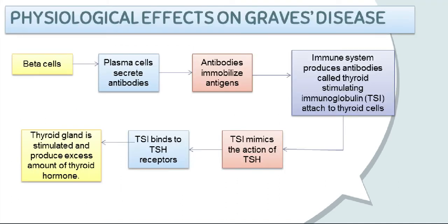How does Graves' disease develop inside a human body? We can evaluate this question by knowing the physiology of the disease state. B cells in the body trigger plasma cells which secrete antibodies. With Graves' disease, the immune system makes an antibody called thyroid-stimulating immunoglobulin, sometimes called TSH receptor antibody, that attaches to thyroid cells. It mimics TSH and stimulates the thyroid to make too much thyroid hormone, causing the thyroid gland to produce an excess amount of thyroid hormone.